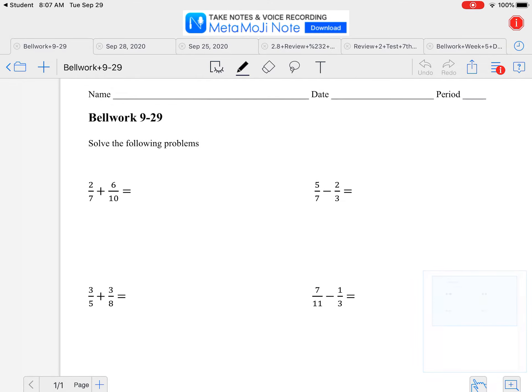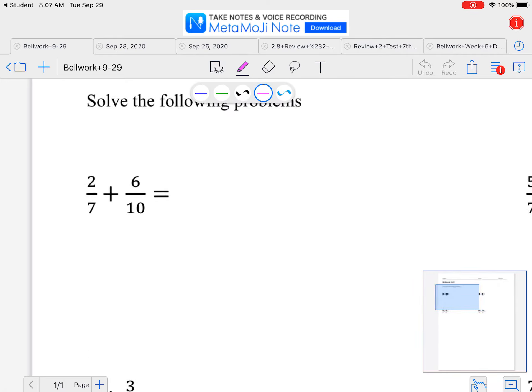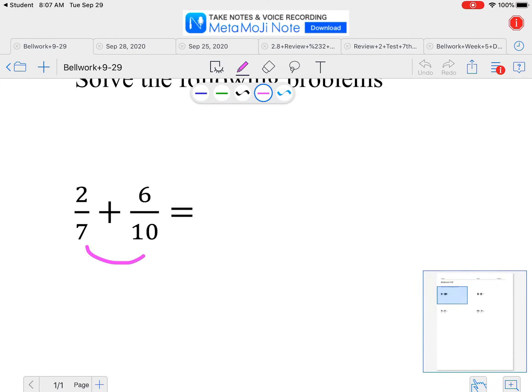Bell work for today is adding and subtracting fractions. The first thing we need to do is get a common denominator. You can always multiply these two bottom numbers together. That would make your denominator.